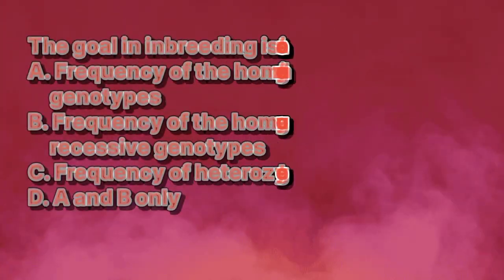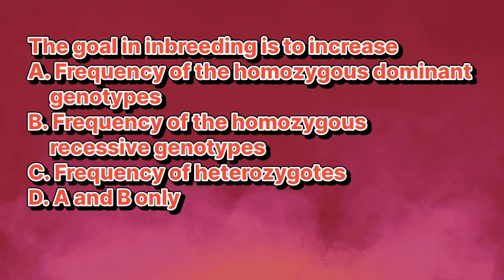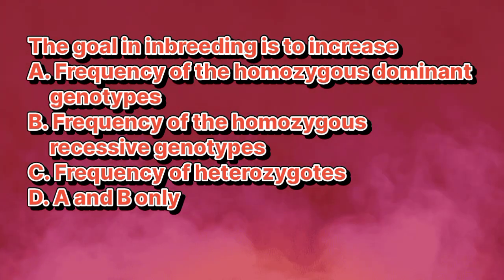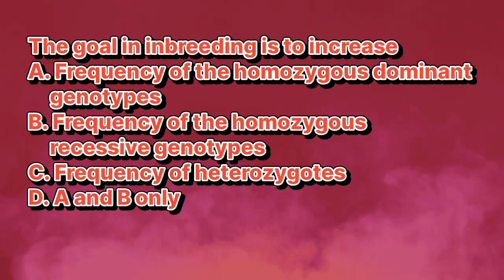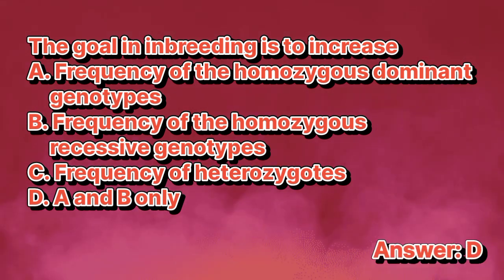The goal in inbreeding is to increase: A. Frequency of the homozygous dominant genotypes. B. Frequency of the homozygous recessive genotypes. C. Frequency of heterozygotes. D. A and B only. The answer is letter D.